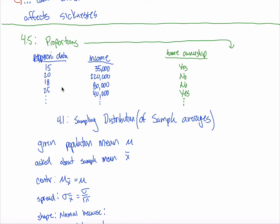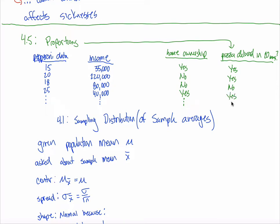Let's make up a pizza example. Instead of being interested in the number of pepperonis on a pizza, I'm interested in whether when I order pizza it arrives within 20 minutes. Pizza delivered in 20 minutes — yes or no. It's not how long it takes; it's a yes or no question. Did the pizza arrive in 20 minutes? I have a bunch of sample data and each observation is a yes or no.